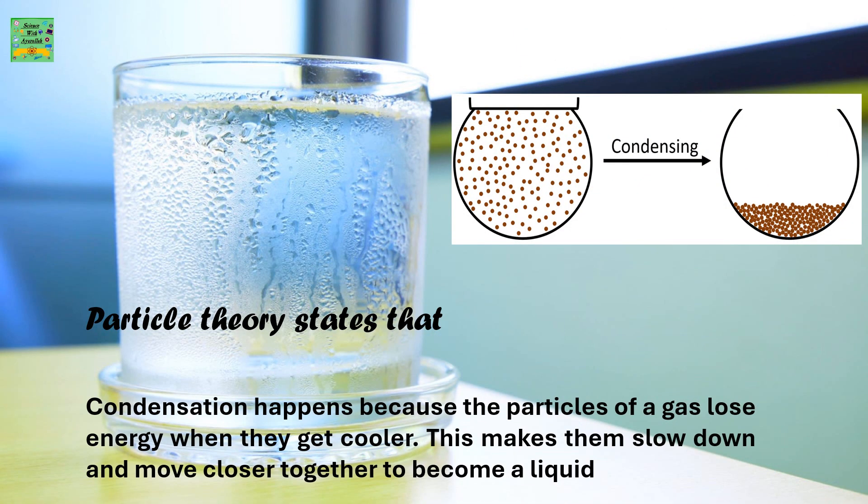The particle theory states that condensation happens when the particles of a gas lose energy and get cooler. This makes them slow down and move closer together to become a liquid. The opposite happens in evaporation, where the particles move further apart because of heat energy. In condensation, the energy is lost, they get cooler, and because of that they move closer together.